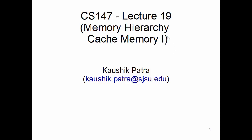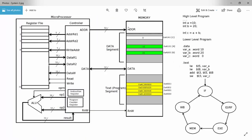Before we start the slides, let me show you this system picture to put things in perspective. The whole computing system has two major parts: one is the microprocessor and the other is the memory. On the board, there is one chip — the microprocessor chip — which is connected through the motherboard connection to the memory card. The diagram shown here is a pictorial depiction from the microprocessor's perspective — how the microprocessor perceives or sees the memory system.